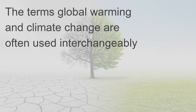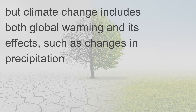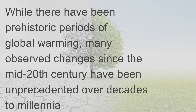The terms global warming and climate change are often used interchangeably. However, speaking more accurately, global warming denotes the mainly human-caused increase in global surface temperatures and its projected continuation. Climate change includes both global warming and its effects, such as changes in precipitation. While there have been prehistoric periods of global warming, many observed changes since the mid-20th century have been unprecedented over decades to millennia.